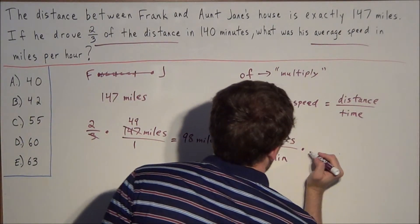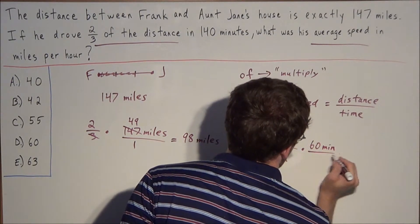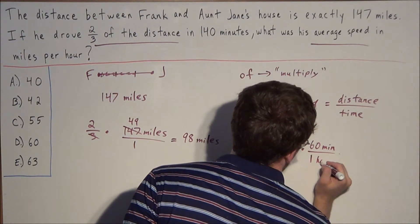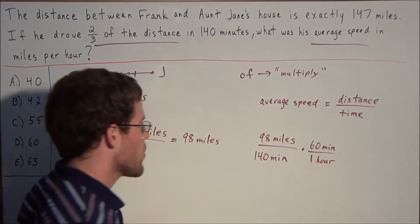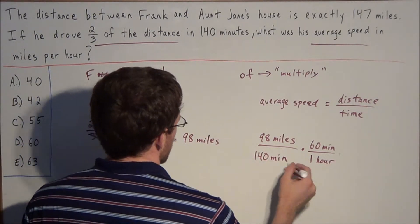So we need to multiply this ratio by 60 minutes over 1 hour. This causes minutes in the numerator and denominator to cancel.